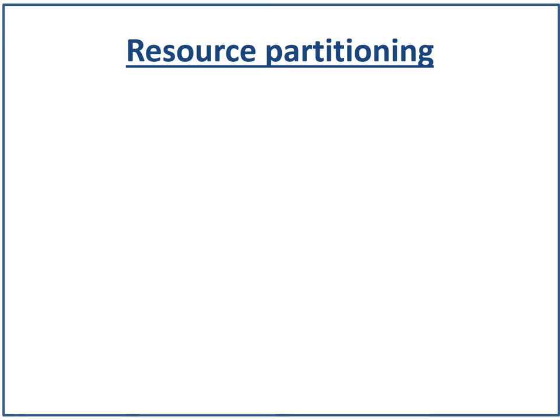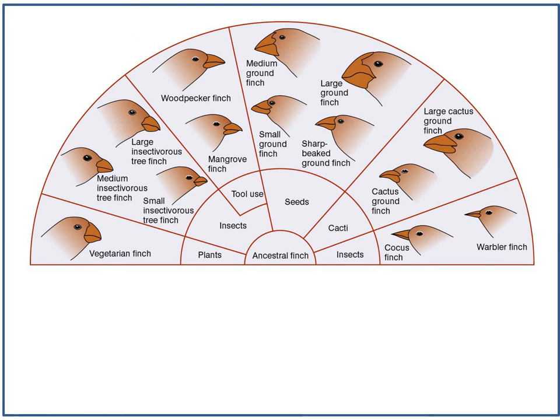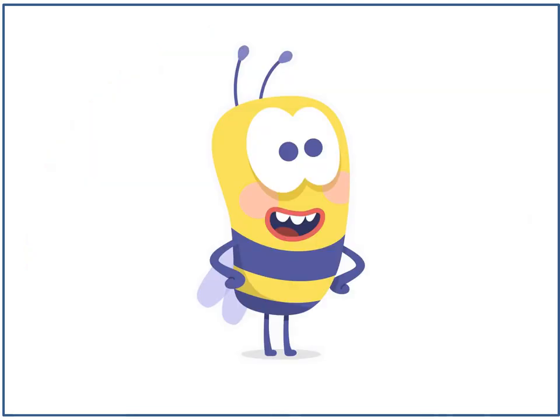Something birds of the same species can do to prevent intraspecific competition is resource partitioning — this can also occur between different species to prevent interspecific competition. Resource partitioning means different individuals use different areas or food types. For example, different species of finch prevent interspecific competition by having different beak sizes, allowing them to eat different types of insects or plants, reducing the need to compete directly with one another.